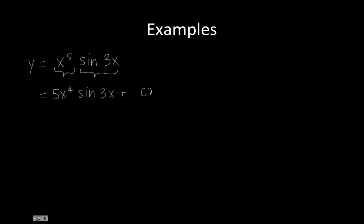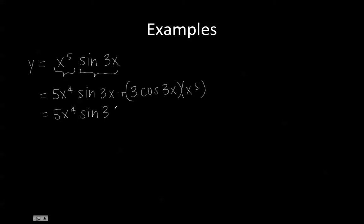The derivative of the second factor is cosine 3x, and using the chain rule, we multiply by the derivative of the inside function, which is 3x. The derivative of 3x is equal to 3, and we multiply this by the first factor. So we can write it out like this, and this is our final answer.